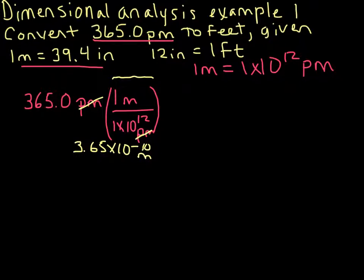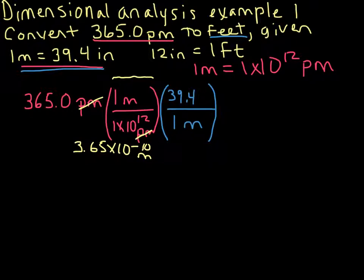Now we're not finished yet, of course, because we want to go to feet. So now we're in meters, and now we're prepared to use this conversion factor, 1 meter equals 39.4 inches. Let's go ahead and use that conversion factor to get into inches. I'm going to put 1 meter on the bottom, because I need these meters to cancel out, and I'm going to put 39.4 inches on the top.